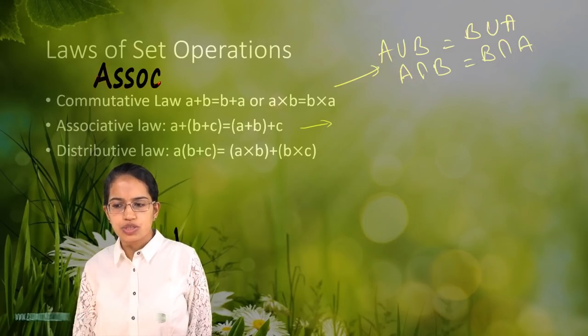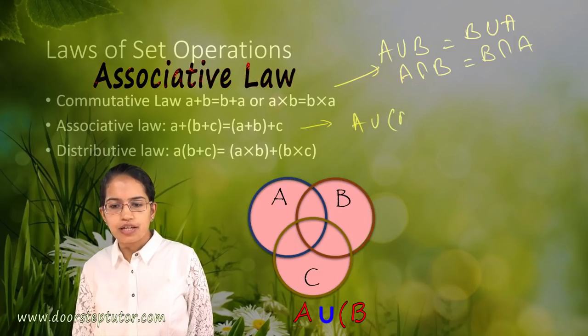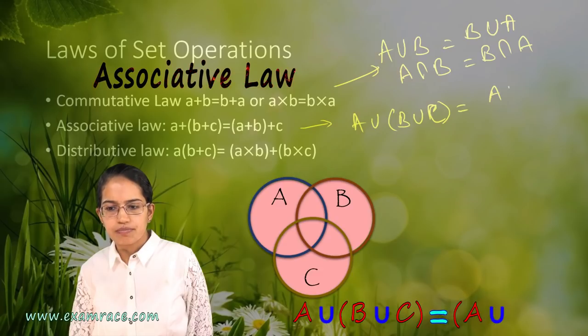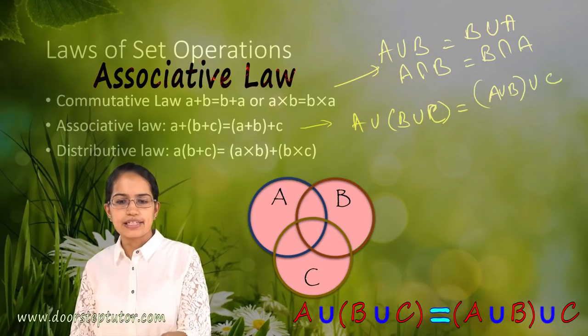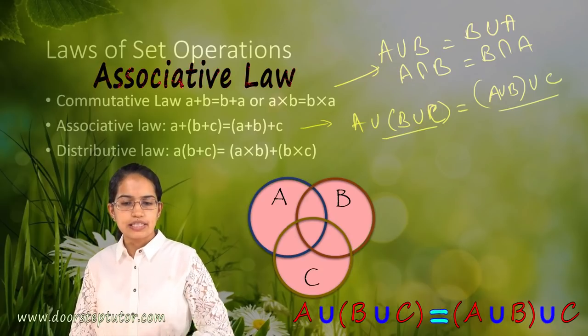The next is my associative law. Associative law says A union B union C would be equal to A union B union C. Either I write it this way or this way it's one and the same thing.